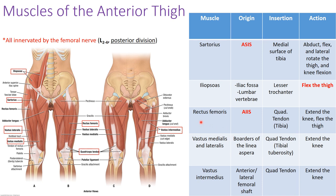Moving into the quad muscles, we start with rectus femoris — the muscle on top — which originates from the AIIS, the anterior inferior iliac spine. This is important for radiology, as you may be asked what structure originates from that landmark. The rectus femoris joins the other quad muscles into the quadriceps tendon, then inserts onto the tibia via the patellar tendon. Its primary action is to extend the knee; however, because it crosses the hip joint, it can also flex the thigh — making it the only quadriceps muscle that acts on the hip.